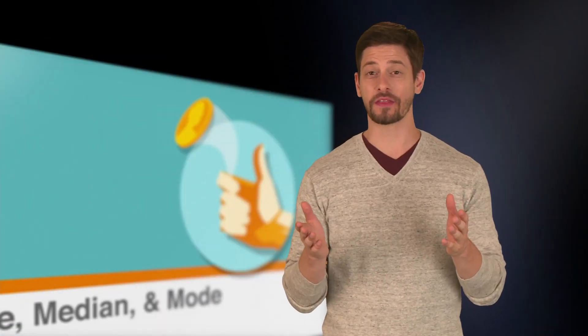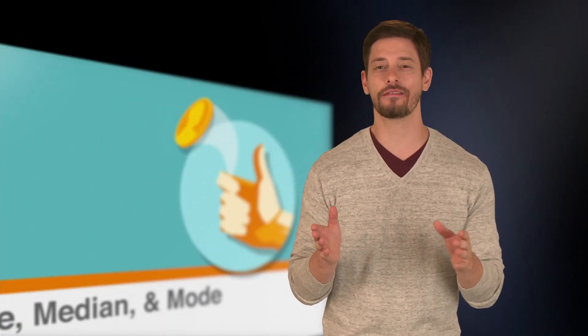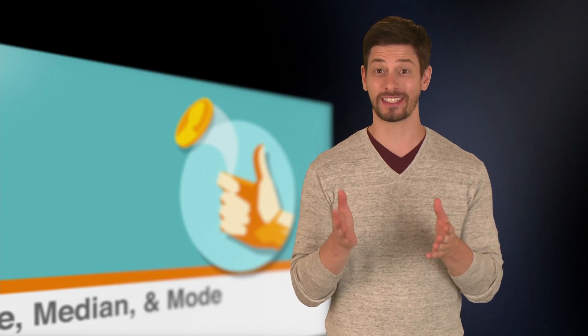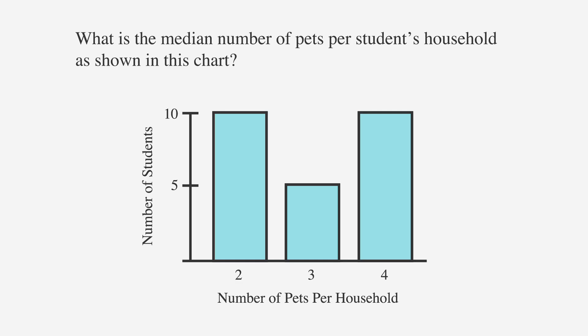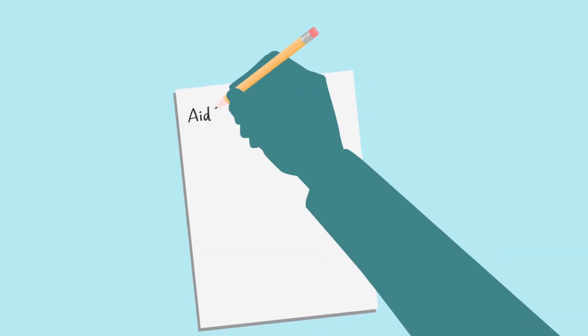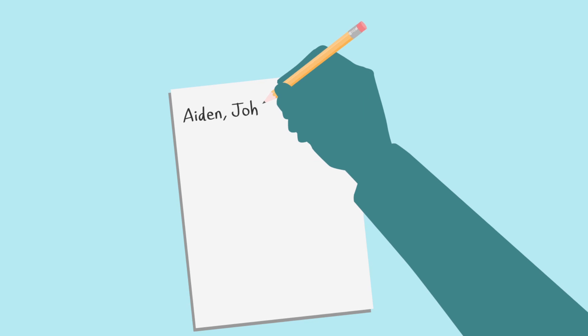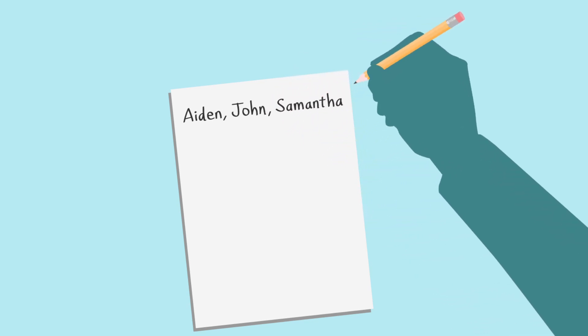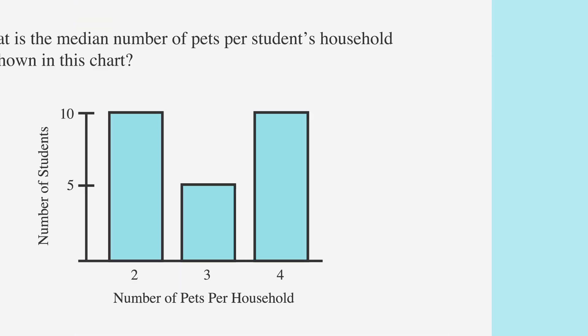Another way you might be asked about the median is in the context of a histogram, which is a fancy name for a chart. Let's take a look at an example of a histogram and an accompanying question. What is the median number of pets per student's household as shown in this chart? We could list out every single person who said they had 2, 3, or 4 pets in a row and cross out our pairs, but that would take a really long time. And there's an easier way to do this by using the chart.